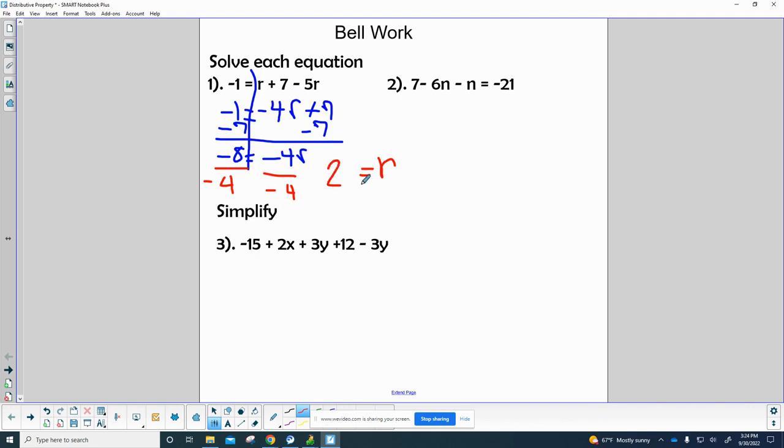Alright, so far so good. Let's do another one where we are solving an equation that has two different variables on the same side of the equation. Here we got minus 6n and minus 1n, so this will simplify to be 7 subtract 7n equals negative 21.